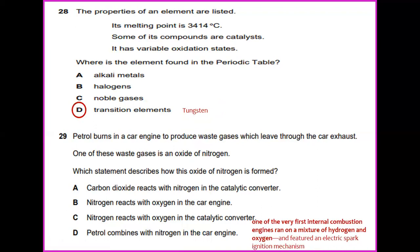Petrol burns in a car engine to produce waste gases which leave through the car exhaust. One of these waste gases is an oxide of nitrogen. Which statement describes how this oxide of nitrogen is formed? One of the very first internal combustion engines ran on a mixture of hydrogen and oxygen and it features an electric spark ignition mechanism. In this, we would say that nitrogen will react with oxygen in the car engine.